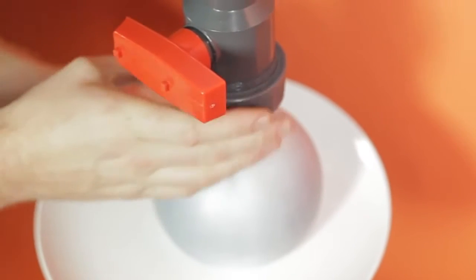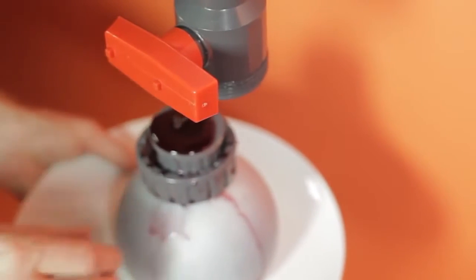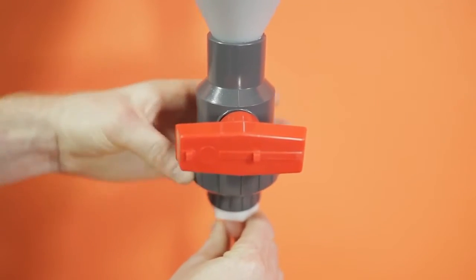Once the secondary fermentation is complete the collection ball is unattached again and the filling hose is put on. Now you go right into bottles or kegs.